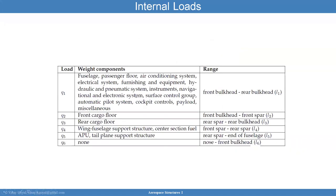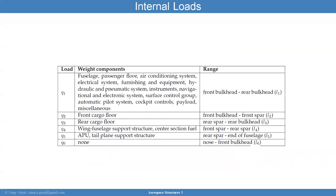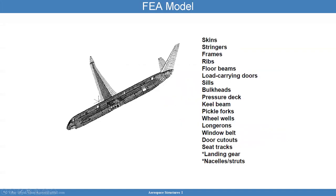Here's an example of the kinds of loads that need to be considered — the different weights of the components. They need to be all considered, and they could be applied as a distributed load. You can see here Q1, Q2, Q3, Q4, Q5. You can apply the weight of that section in the design, in the analysis. And so then you have your finite element model.